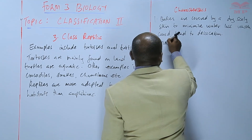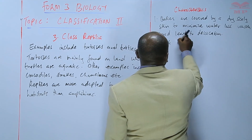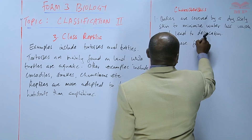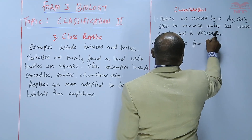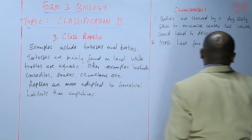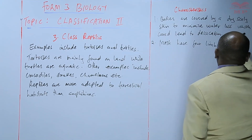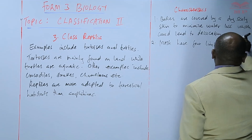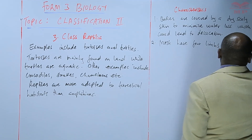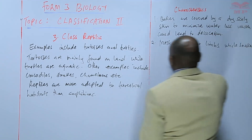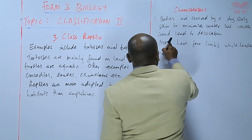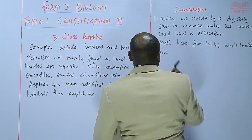Most have four limbs, while snakes have no limbs.